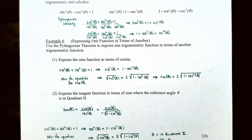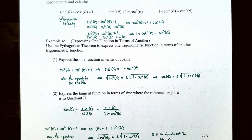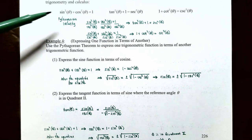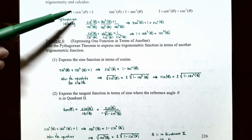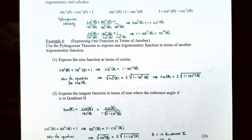In example four, we're going to express one function in terms of another. Use the Pythagorean identity to express one trigonometric function in terms of another. Number one: express the sine function in terms of cosine. Since we know that sine squared of theta plus cosine squared of theta equals 1, that gives us a relationship between sine and cosine, and we can start with that expression.